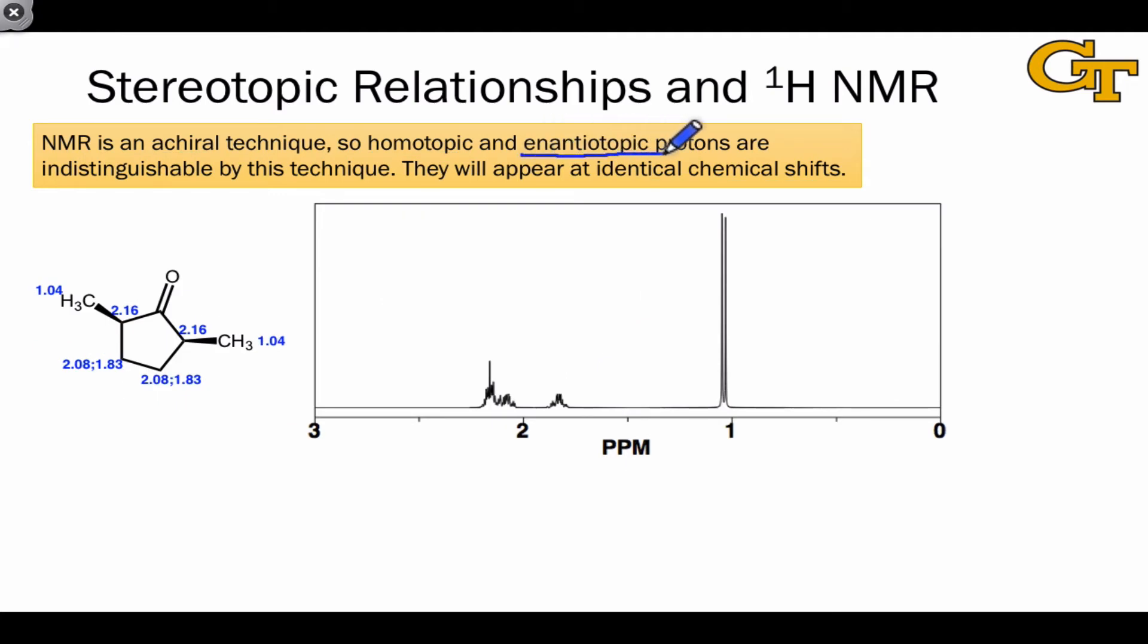Enantiotopic protons are also indistinguishable by NMR, since the radio waves used to excite the protons are themselves achiral. This molecule provides a nice example of this. If we draw this molecule from kind of a side-on perspective with the ring oriented like this, we find that both methyl groups are pointed above the plane of the ring, like so.